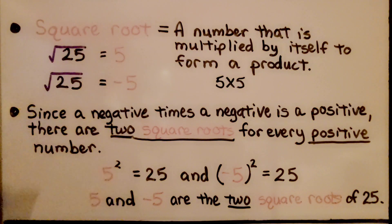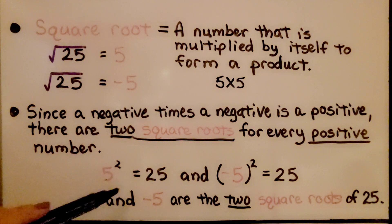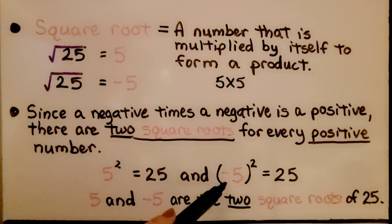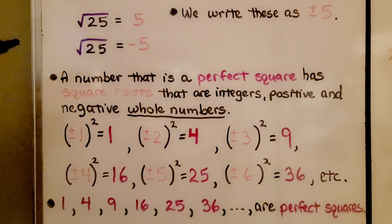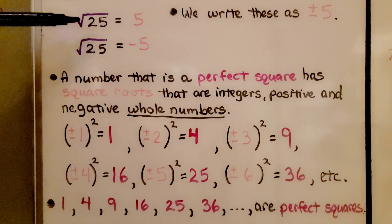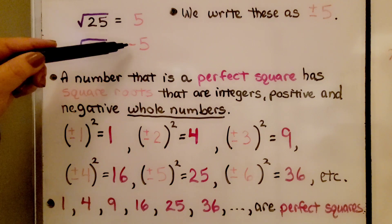But it's also equal to negative 5, since a negative times a negative is a positive. There are two square roots for every positive number, like positive 25. 5 squared is equal to 25, and negative 5 squared is equal to 25. So positive 5 and negative 5 are the two square roots of positive 25.